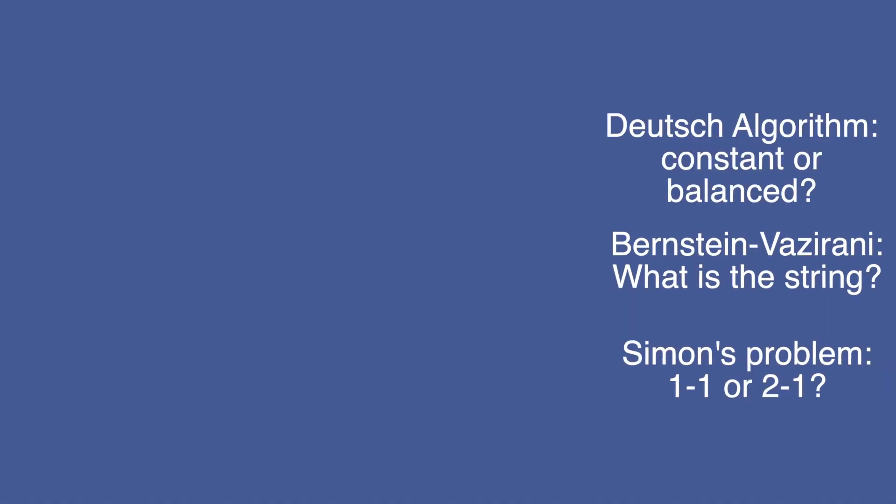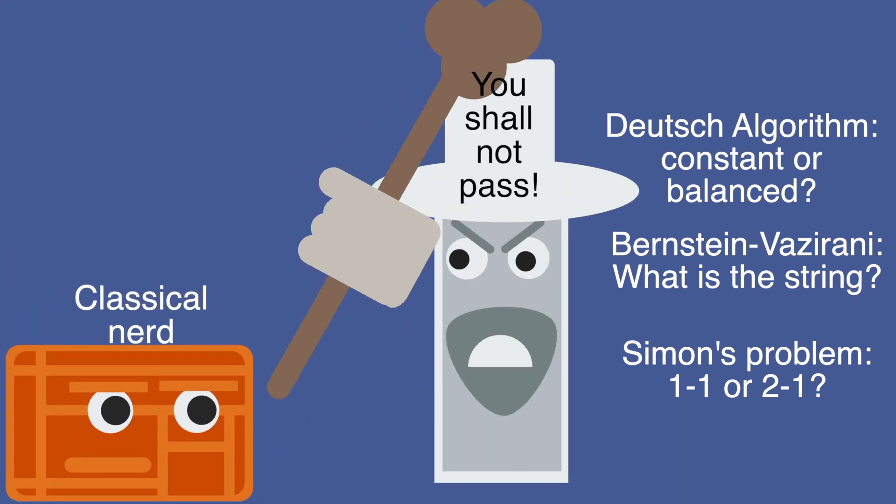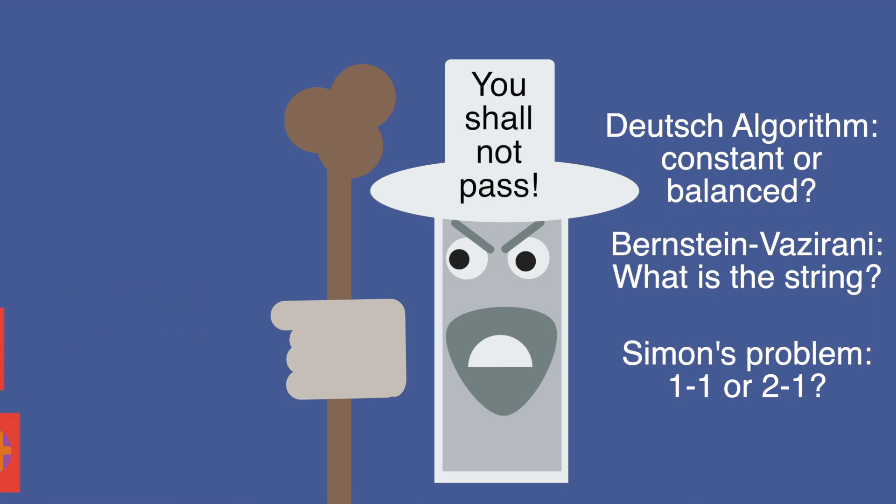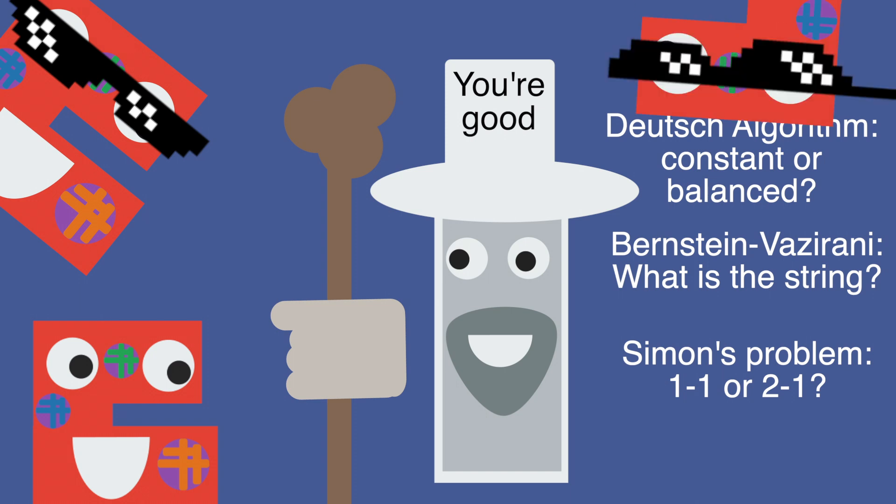The algorithms are important because they demonstrate that there are indeed problems that only a quantum computer can effectively solve. Those were the necessary predecessors to the more practical algorithms that get the spotlight nowadays, such as Grover's algorithm and Shor's algorithm.